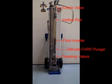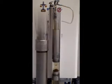This is the velocity system. At the top is a check valve. Below that is a hollow rod which carries fluid and acts as the power string. Below that is the fluid inverter followed by the ultimate FARR plunger and traveling valve.